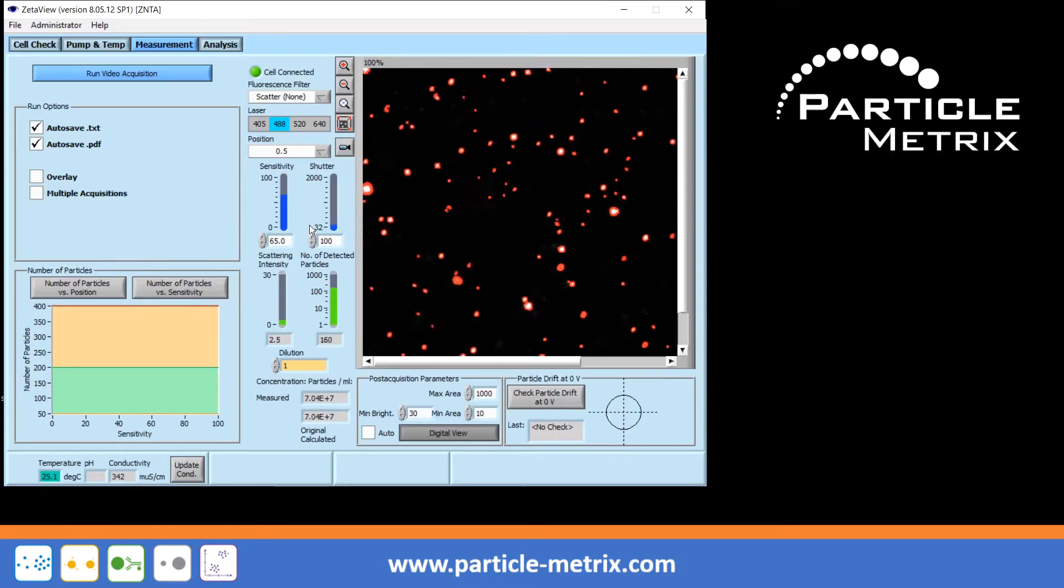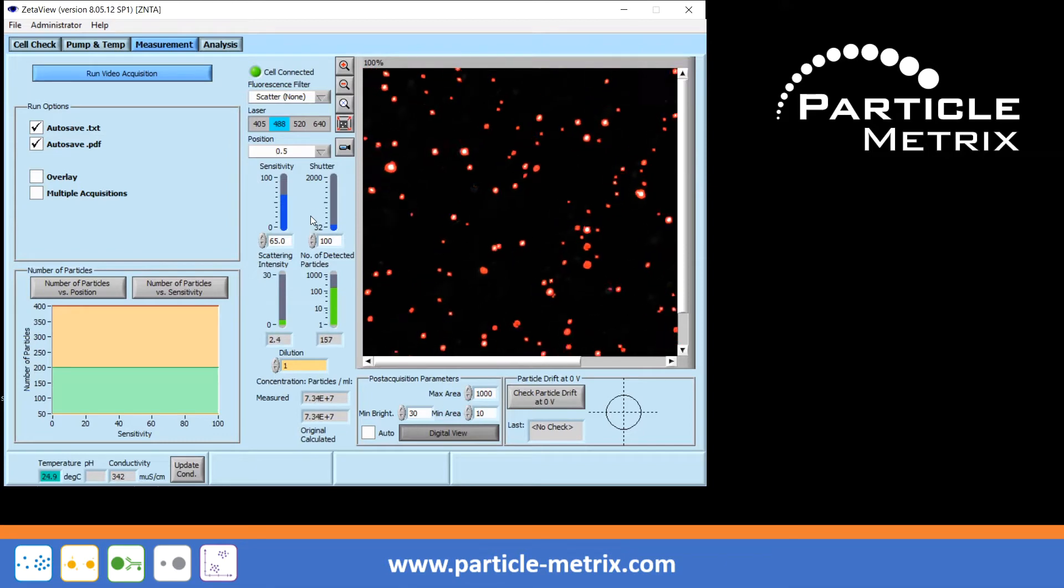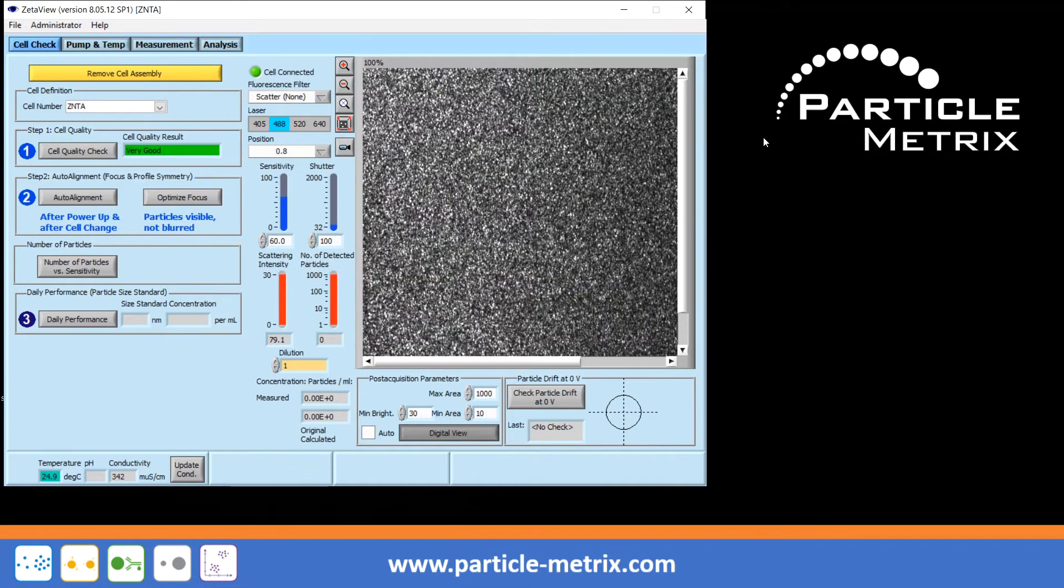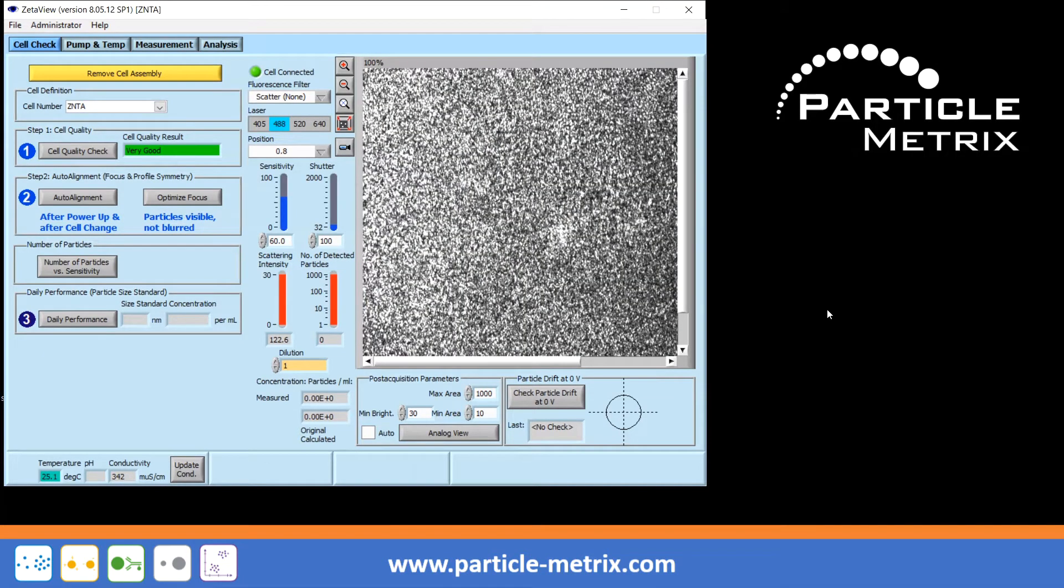Air bubbles in the measuring cell of the ZetaView instrument can appear very differently. For example, a grey or almost white background in the field of view indicates an air bubble.